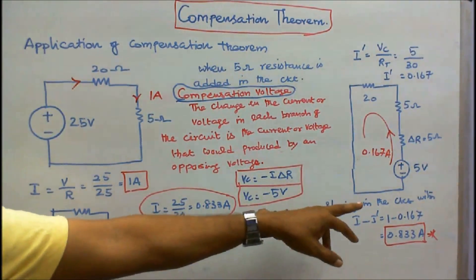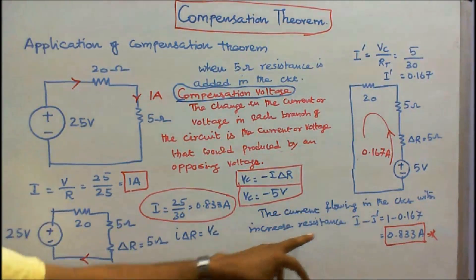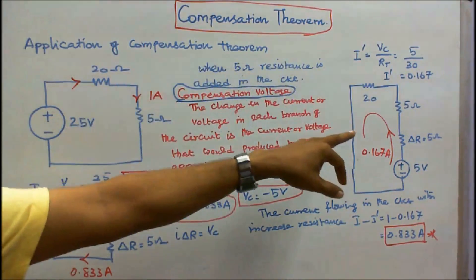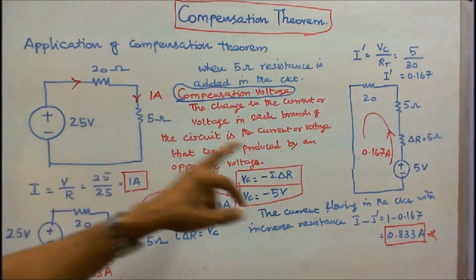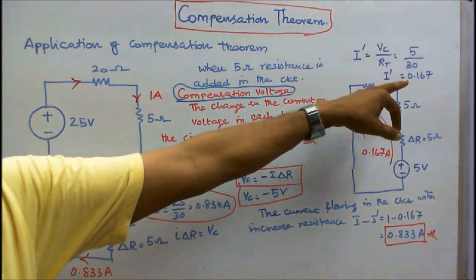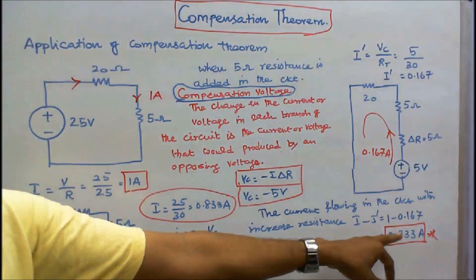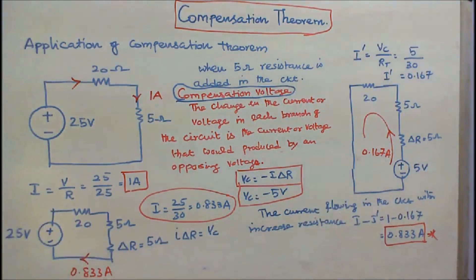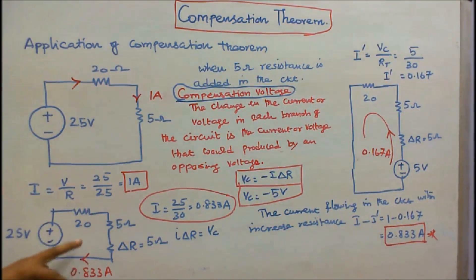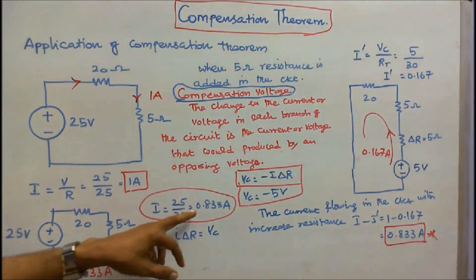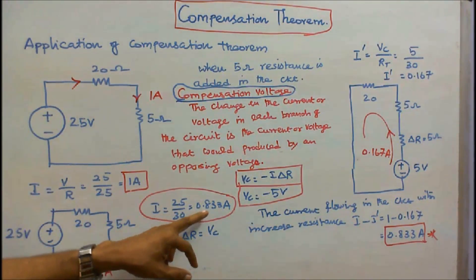Now, the current flowing in the circuit with the increase in resistance equals I minus I dash. Here I equals 1, I dash equals 0.167, so 1 minus 0.167 equals 0.833 amps. I can verify: the total resistance is 20 plus 5 plus 5 equals 30 ohms, voltage is 25 volts, therefore I equals 25 by 30, which equals 0.833 amps. Verified.